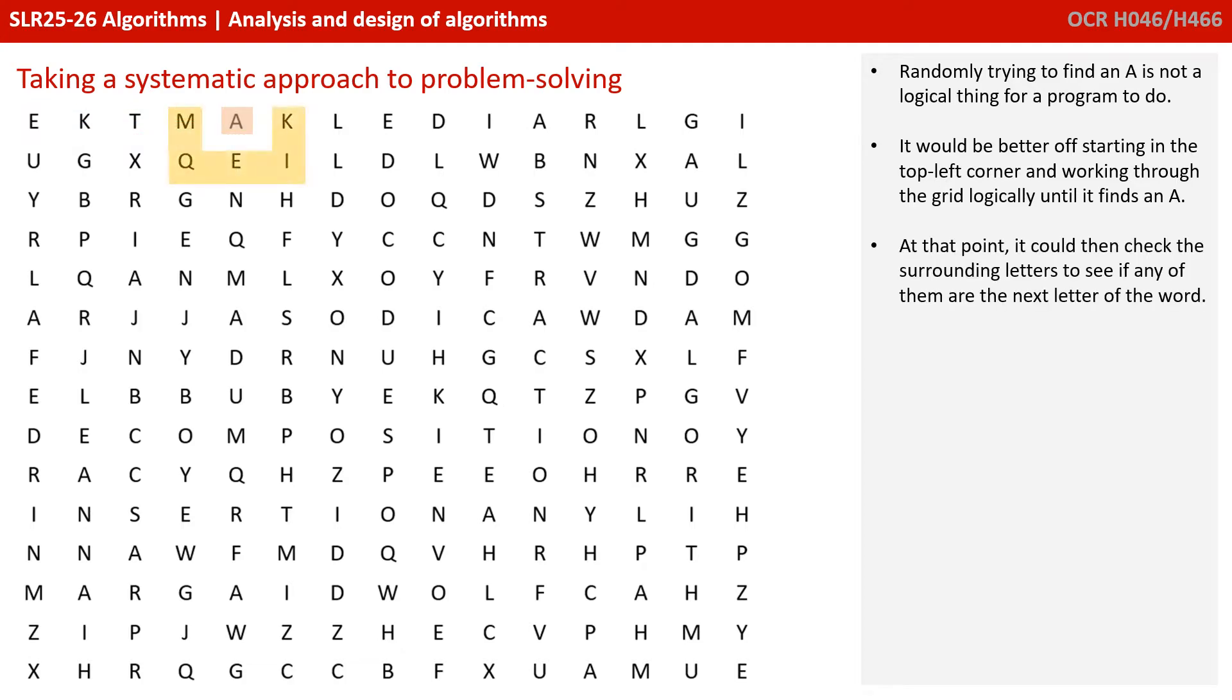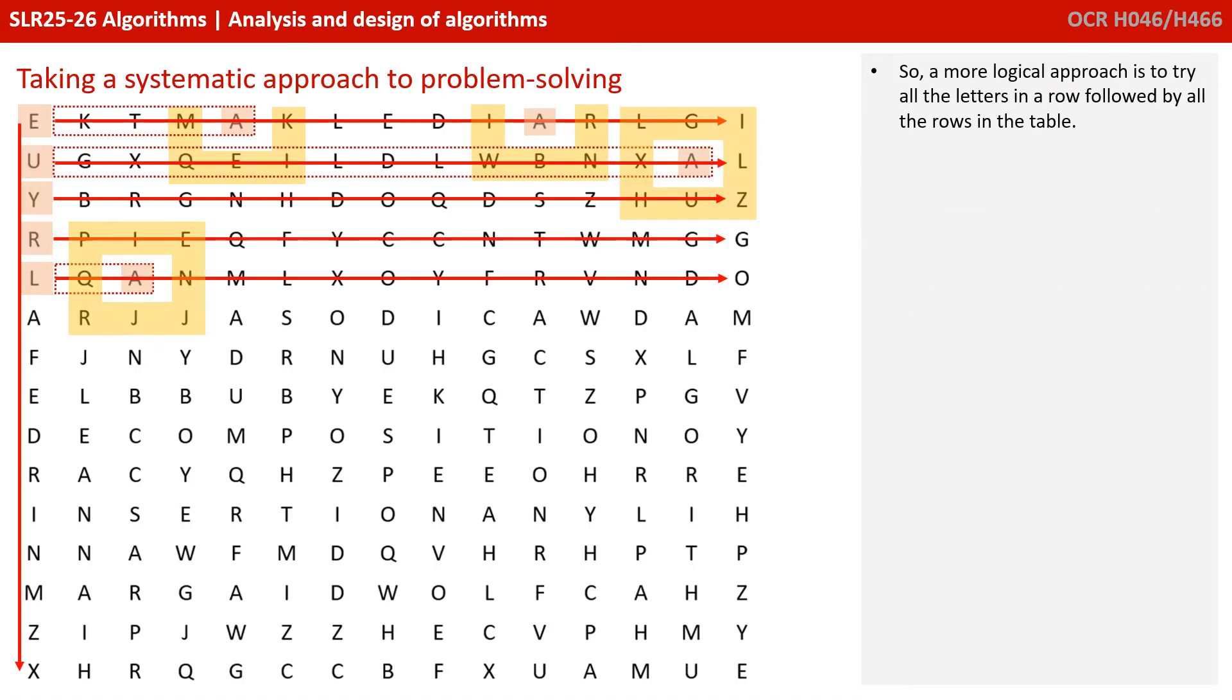At this point, we can then check all the letters that are adjacent to it to see if we can find the second letter in the word. And if not, we can move on to the next letter. So we want to try all the letters in a row and then we want to try all the rows so we've done all the columns.